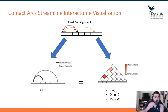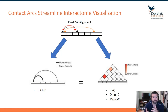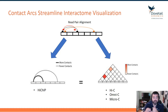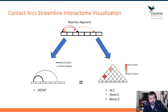The arc visualization is a hallmark of Hi-CHIP data that we'll get to later on. The contact matrix is more commonly used in things like Hi-C, Omni-C, and Micro-C, which is what we're going to start our case study on.